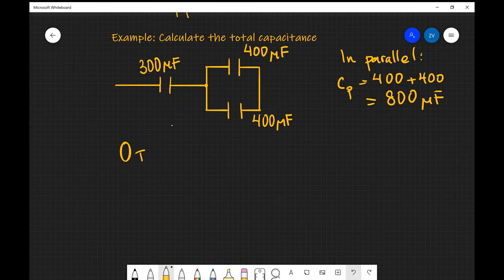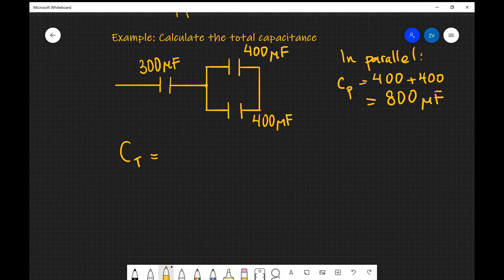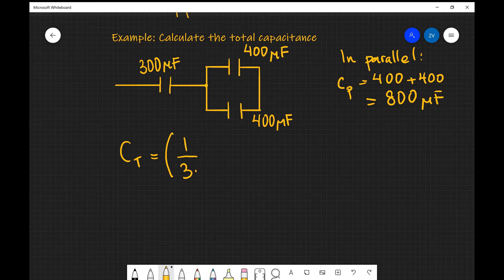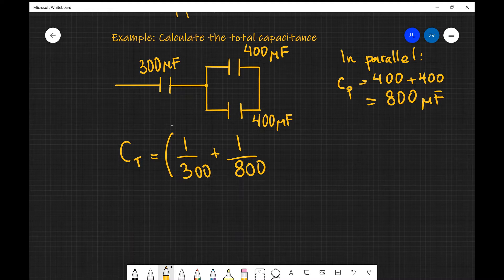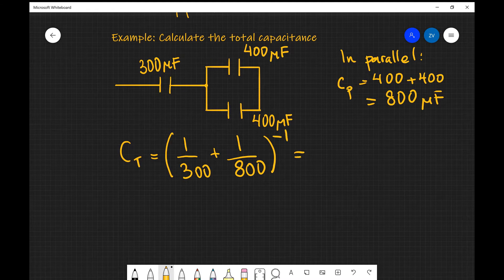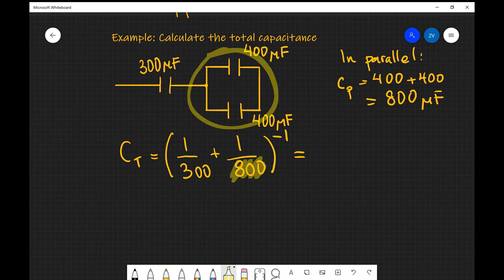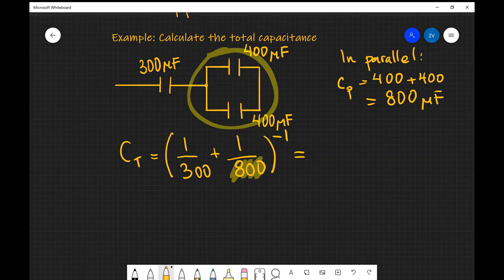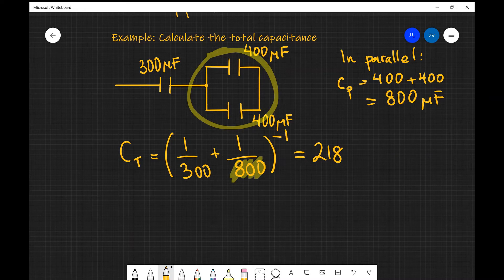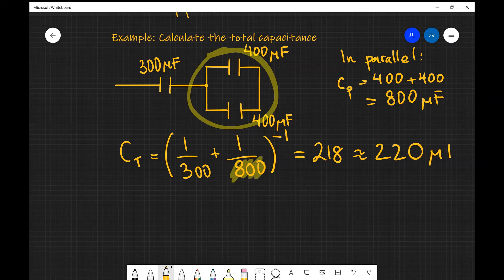The total capacitance is going to be 1 over 300 plus 1 over 800, all of it raised to the power of minus 1. Notice that this 800 actually acts almost as if it was a separate capacitor. And if we were to input this into a scientific calculator, we are going to get 218, and we'll just use two significant figures. So 220 microfarads.